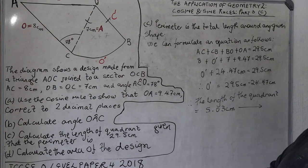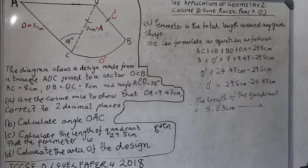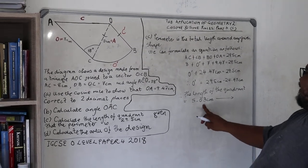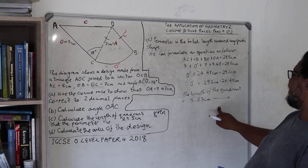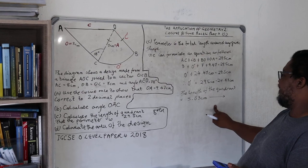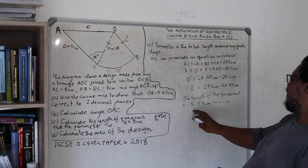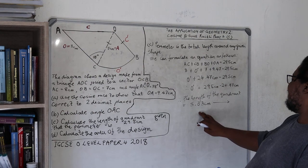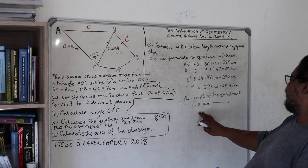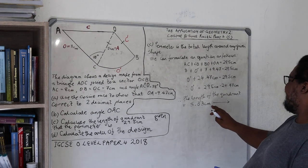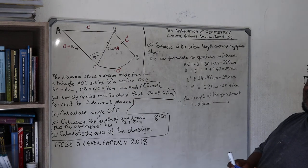And we are done. We are going to keep the length of the quadrant because we might need it in answering the last question. So remember that the quadrant's length has been calculated to be 5.03 centimeters. Thank you.